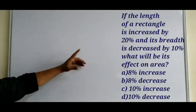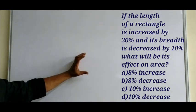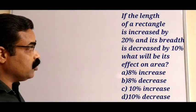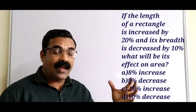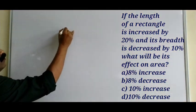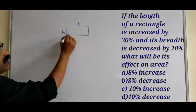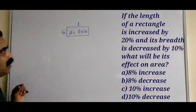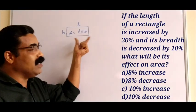The next question: if the length of a rectangle is increased by 20 percent and its breadth is decreased by 10 percent, what will be the effect on its area? Four options are given. A rectangle has length L and breadth B, and its area is A = L × B. When you increase the length by 20 percent and decrease the breadth by 10 percent, what happens to the area?